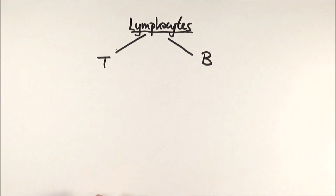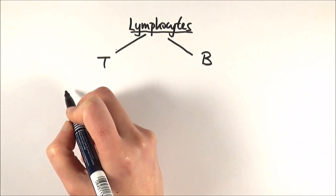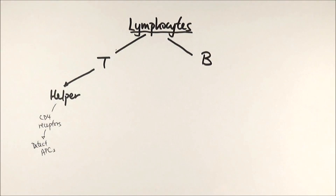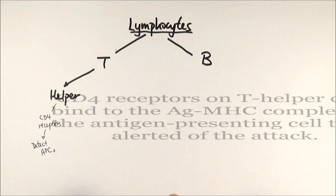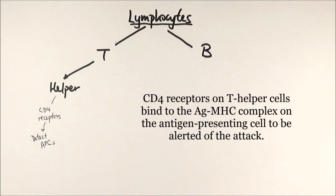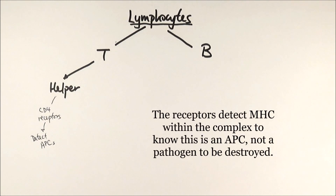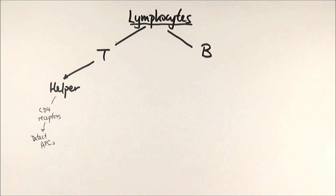Within T cells, we'll look at four specific types. Number one is T helper cells. T helper cells have CD4 receptors on the cell surface membrane, which help them bind to antigen-presenting cells and detect them. These receptors bind to the antigen and the MHC on the APC, telling the T helper cell that this is an antigen-presenting cell — our own cell — alerting them of the attack.